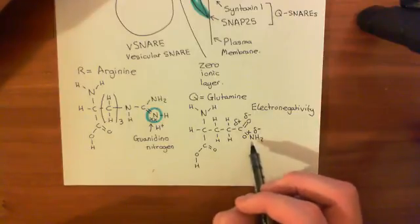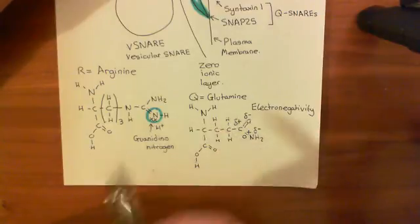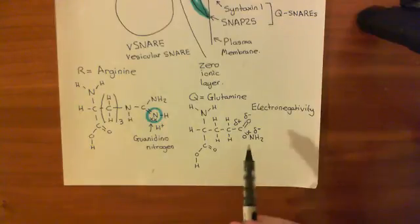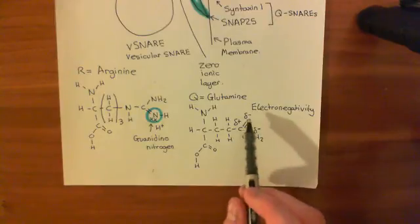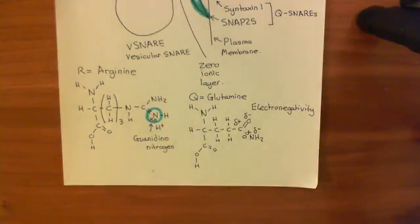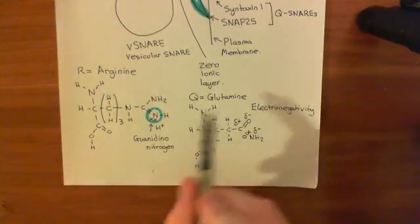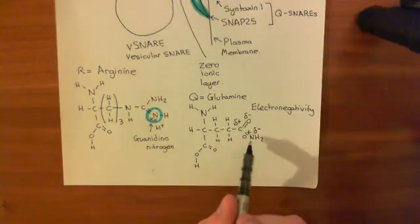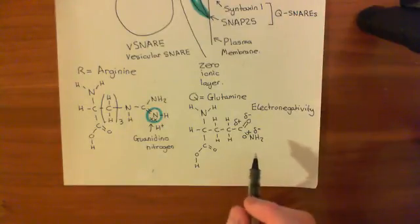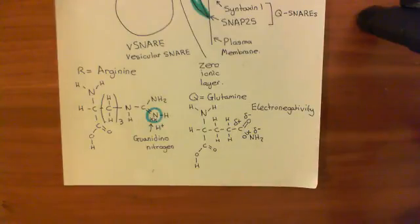You might ask: here we have another nitrogen, which surely has a lone pair of electrons and can gain a proton just like the guanidino nitrogen in arginine. The answer is no. Nitrogen atoms that are in amide bonds like this very rarely get protonated, and they certainly don't get protonated at physiological conditions. You have to expose them to very strong acids — very high concentrations of proton — to get this nitrogen in an amide group to become protonated. So the nitrogen in amide groups just doesn't get protonated in physiological conditions, and the end of this glutamine amino acid has a slight negative charge.